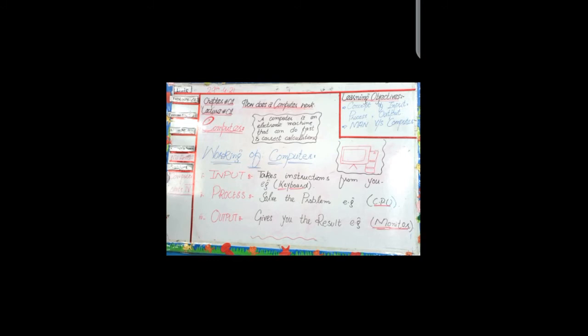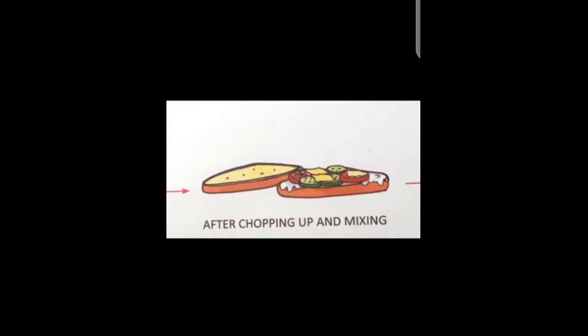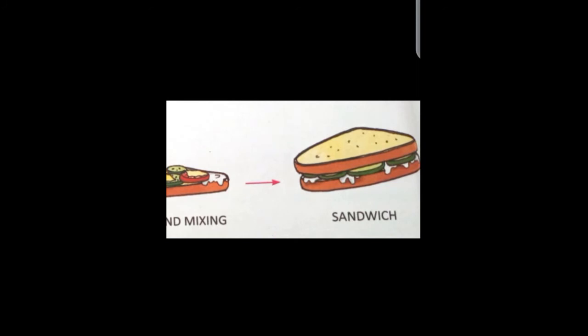Another example from daily life: you want to make a sandwich. The ingredients are bread, tomatoes, cucumber, and cheese. All these ingredients are separate. When you combine all ingredients in the proper way, you process them properly, and you have a proper sandwich ready. You are hungry, so you eat it.